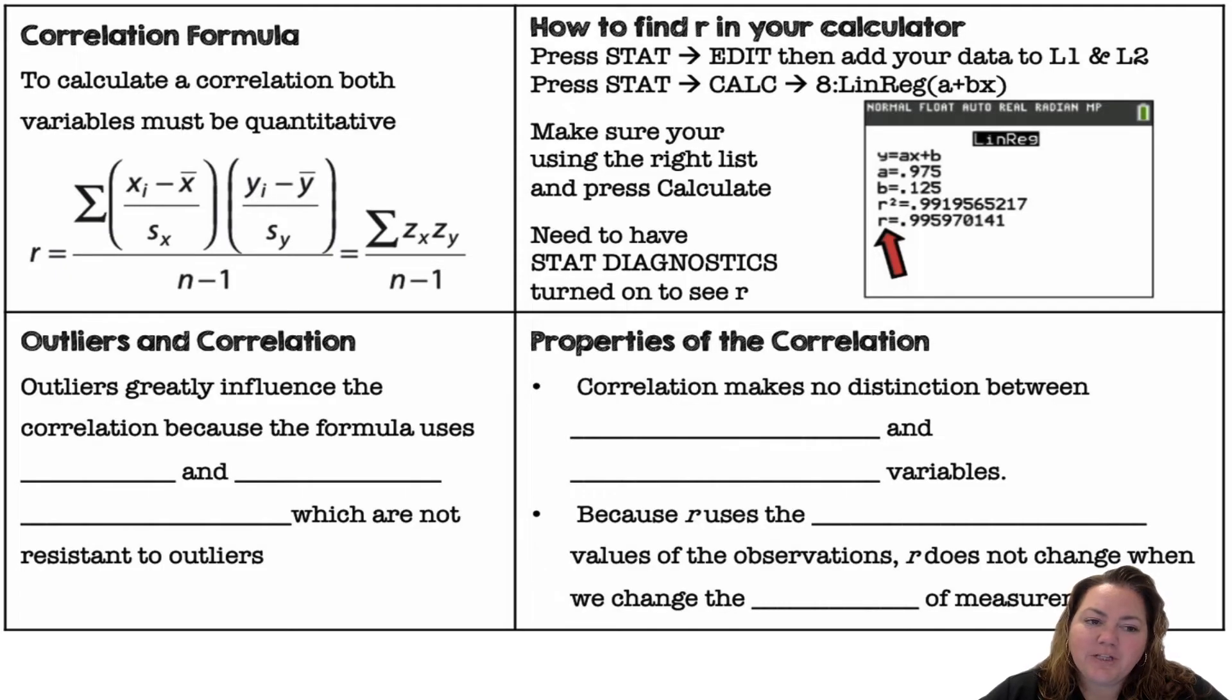The correlation formula, if you wanted to calculate it out by hand, is the summation of each individual x value minus the mean of the x values divided by the standard deviation of the x values. So that would be the z-score of your x values times the z-score of your y values divided by n minus 1.